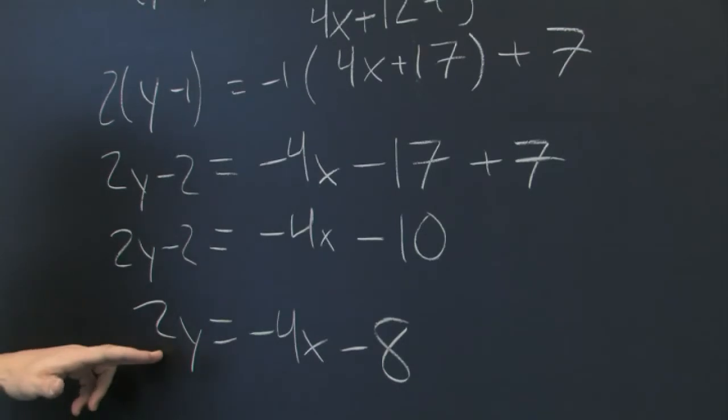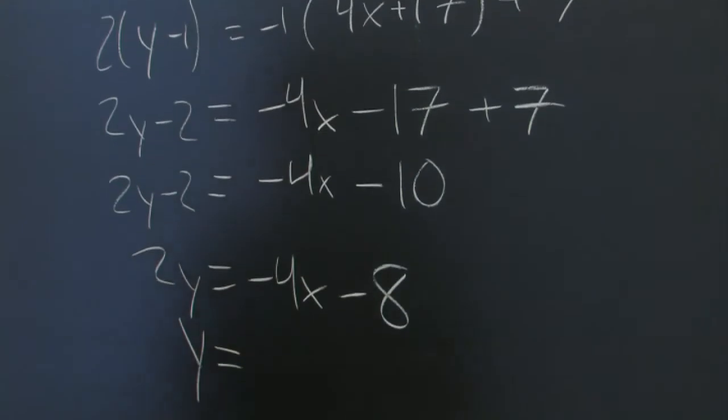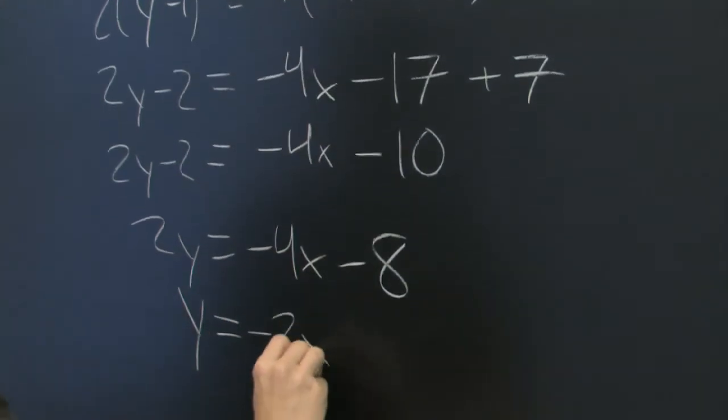Finally, we'll just divide by 2 on both sides and then we'll be done. Y equals negative 2x minus 4.